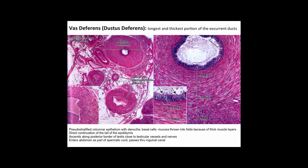The vas deferens or ductus deferens is the longest and thickest portion of the excurrent duct system. It consists of pseudostratified columnar epithelium with stereocilia and basal cells, with the mucosa thrown into folds by thick muscle layers, in direct continuity with the tail of the epididymis. It ascends along the posterior border of the testis near the testicular blood vessels and nerves, entering the abdomen as part of the spermatic cord through the inguinal canal. Histological images show the very thick muscle layer relative to the lumen size.